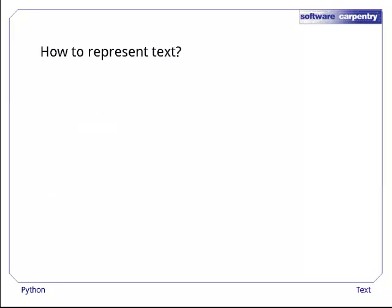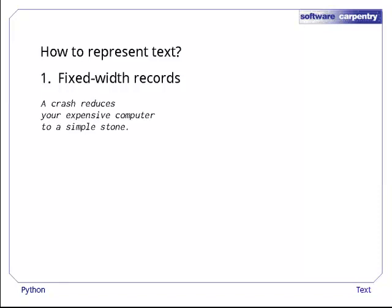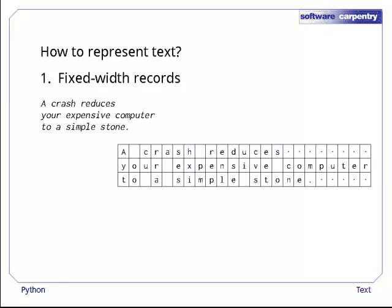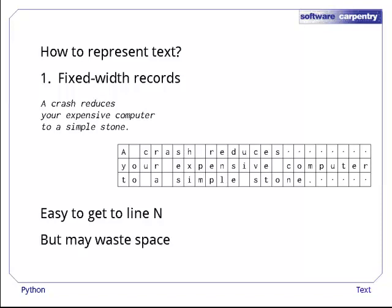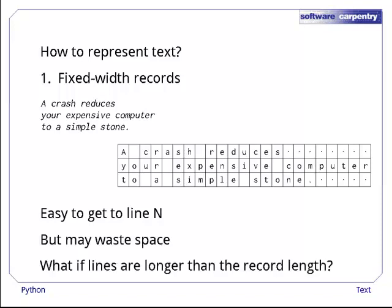Next question: how should text containing many characters be represented? The first choice, which was dictated by the punch card technology of the 1940s and 1950s, was to use fixed-width records in which each line was exactly the same length. For example, a computer would lay out a haiku in three records as shown here, where the dot character means unused. This representation makes it easy to skip forward or backward by N lines since each is exactly the same size, but it may waste space, and no matter what length we choose, we'll eventually have to deal with lines that are longer.